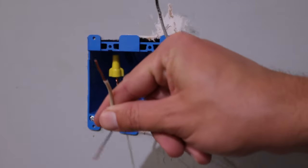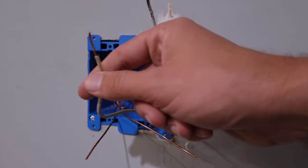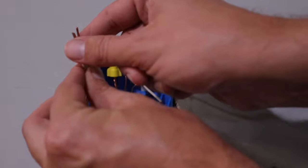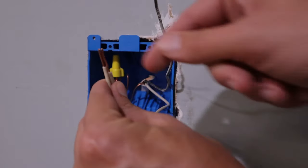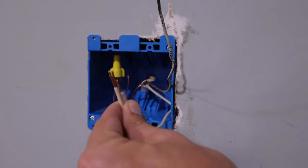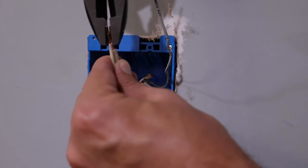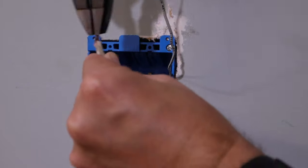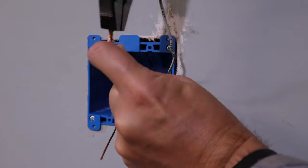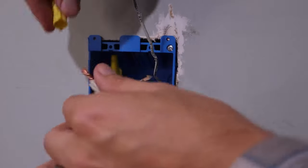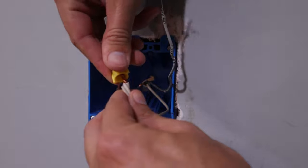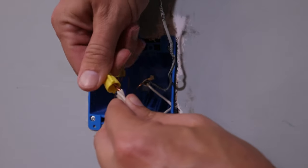That brings us to our white neutral wire, and we're going to do the same thing as we just did with the ground wire. We're going to take all of our neutral wires, put them all together, and then start getting them spun together. Once you've got those started together, then just put a wire nut on those as well.